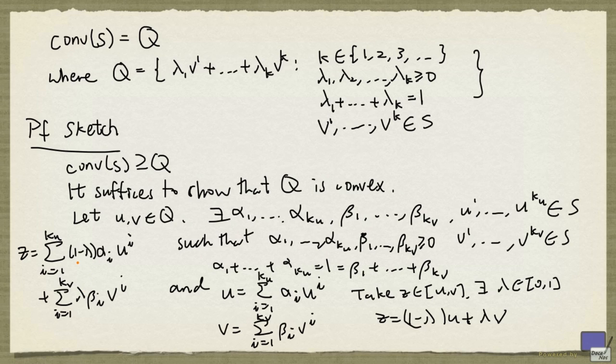So the final step is actually to show that the sum of all these coefficients is 1. We have established that Z can be written as the convex combination of elements of S, and so Z is going to be in Q. And that completes the proof.